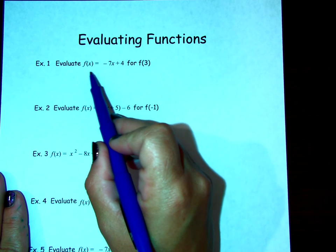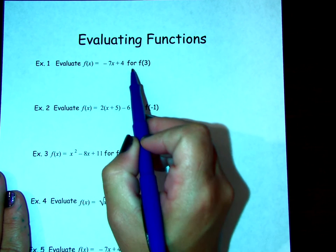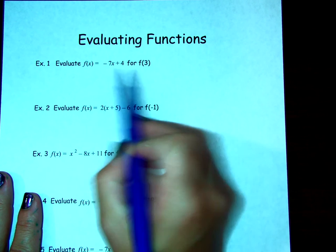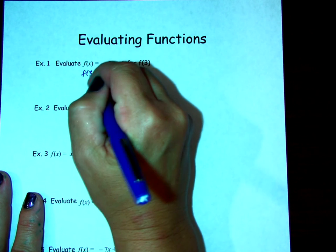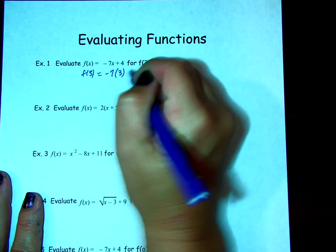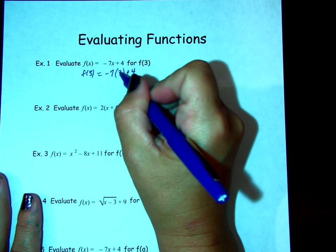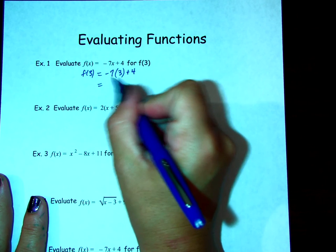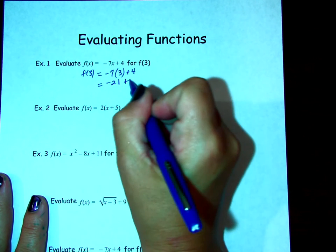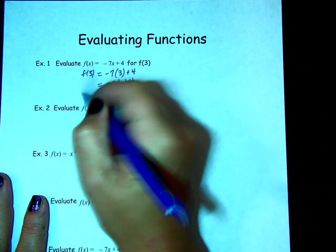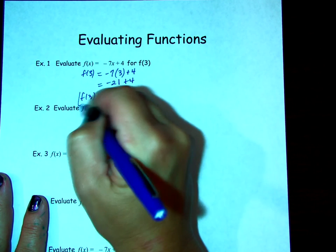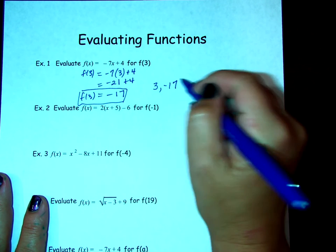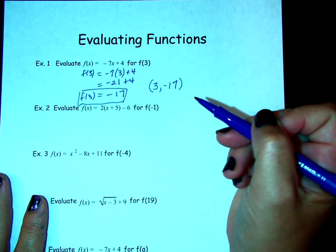So in this first one, evaluating f(x) = -7x + 4 for f(3), for every instance that there appears an x in the function, we're now going to input 3 as that value. So f(3) equals -7 times 3 plus 4. Notice I use parentheses to plug in that input for x. Then we use PEMDAS. We're going to multiply before we add. And f(3) equals -17. What that means is for an input of 3, I have an output of -17. It could be written as a coordinate pair like this.